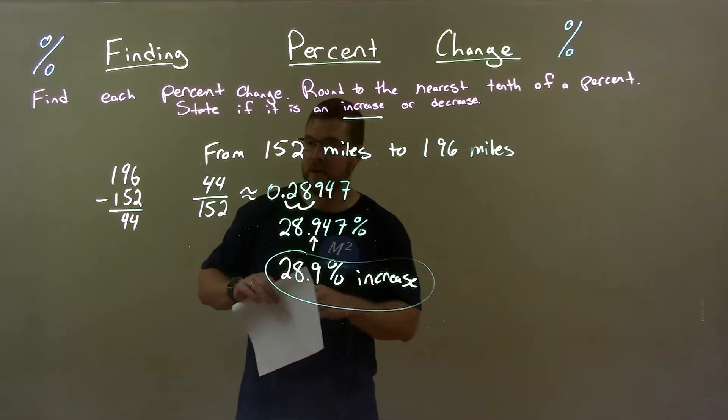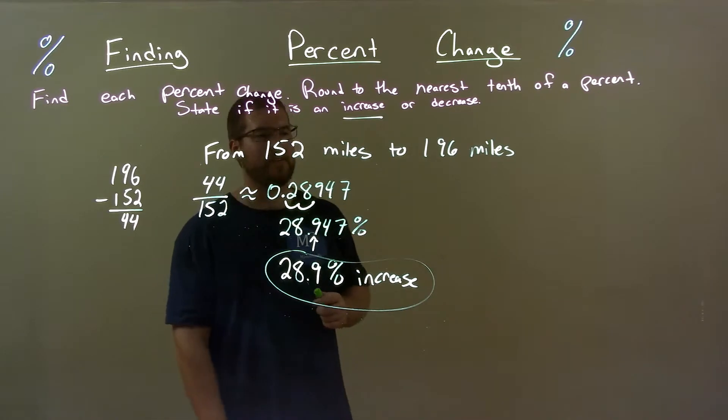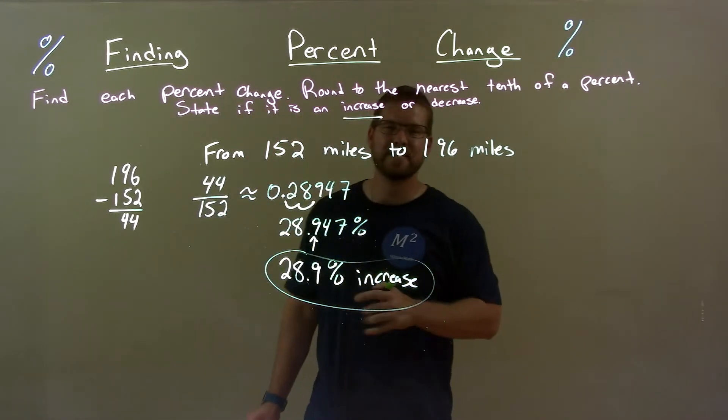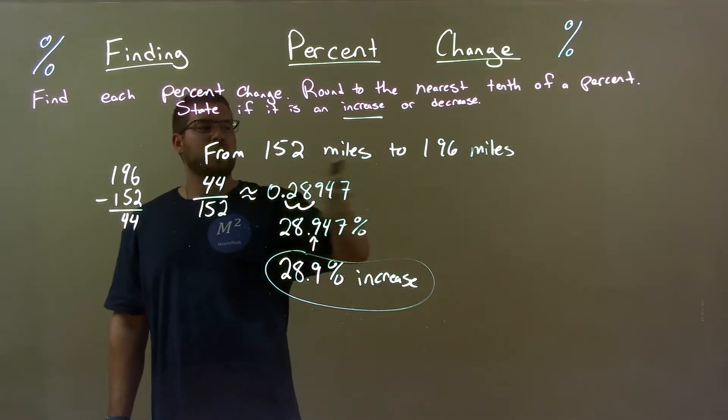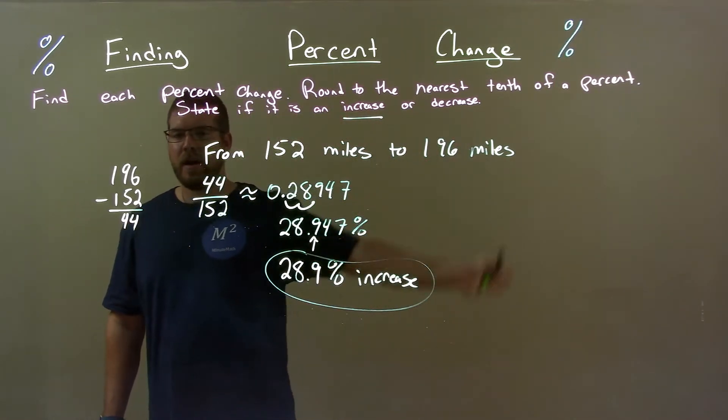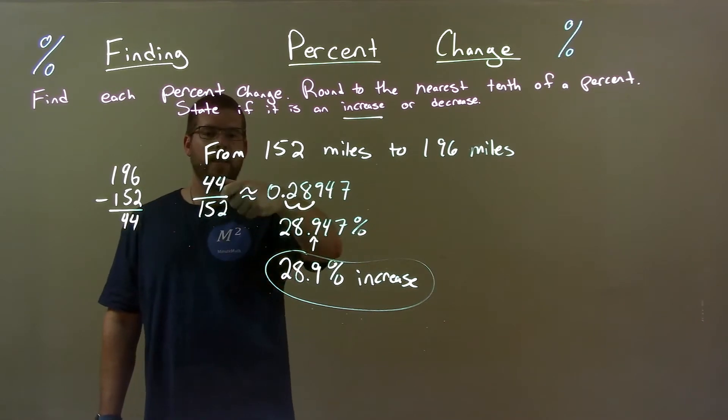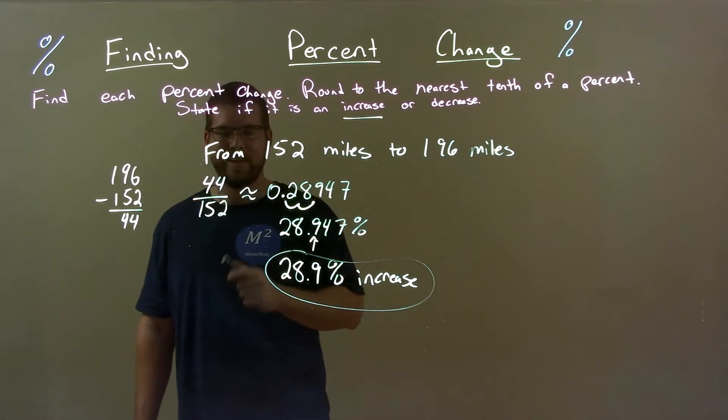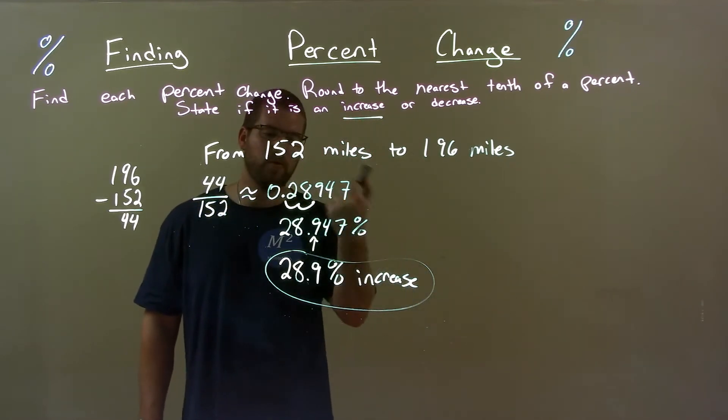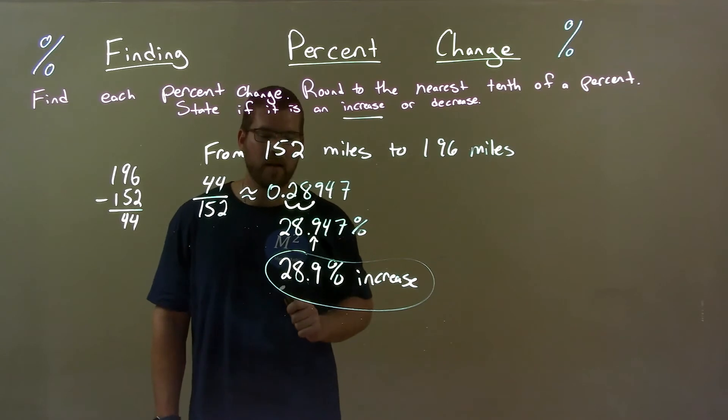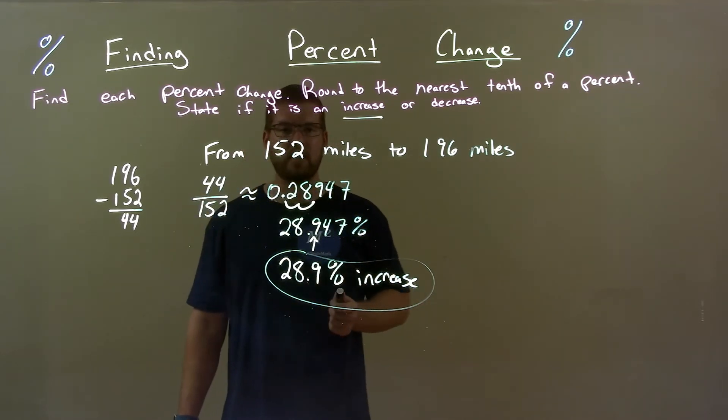Quick recap. We're given from 152 miles to 196 miles and we defined the percent change. Well, we see that's an increase right there. Then we found the difference between the two, took that number divided by the first number, got a decimal. Decimal became a percent, percent was rounded to the nearest tenth. Bring the increase down, and our final answer is 28.9 percent increase.